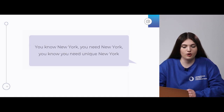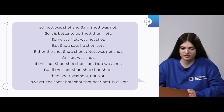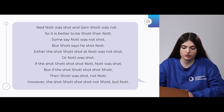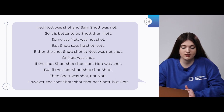Third tongue twister: 'You know New York, you need New York, you know you need unique New York.' Let's try quicker together. And the last one — a long tongue twister with 'shot' and 'not': 'Not not was shot and some shot was not, so it is better to be shot than not. Some say not wasn't shot, but shot says he shot not. Either the shot shot shot at not was not shot, or not was shot. If the shot shot shot not, not was shot. But if the shot shot shot shot, then shot was shot, not not. However, the shot shot shot shot not shot, but not.'